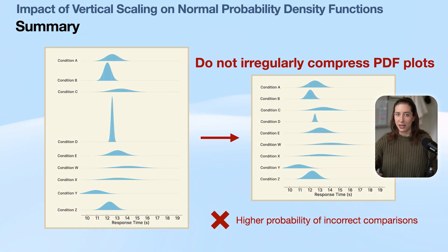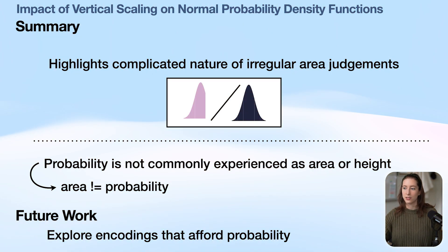In summary, we highly recommend against irregularly compressing PDF plots, simply because it raises the probability of readers incorrectly comparing those plots. So these results highlight the complicated nature of irregular area judgments.